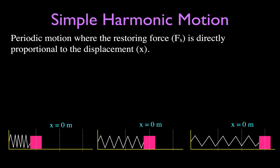The most common example you'll see for Simple Harmonic Motion is a horizontal spring on some surface with a mass attached to it. If we have the mass at the equilibrium position, the spring is at its natural length. We can displace the spring by pulling it to the right, applying a force to it, giving it some displacement X — to the right is typically positive. We could also compress it, displacing the mass to the left, which we call the negative displacement.